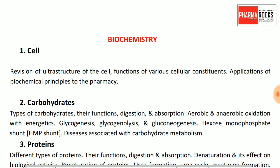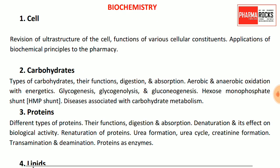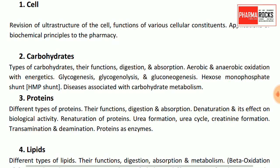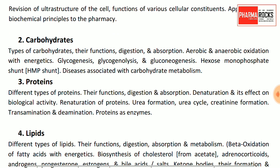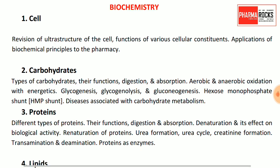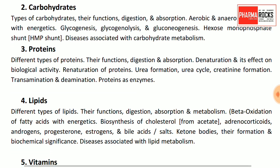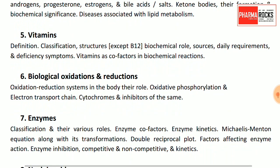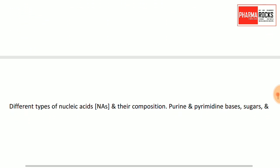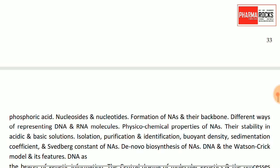For biochemistry in GPAT, the recommended book is U. Satyanarayana. Prefer chapters on cell, carbohydrates, proteins, lipids, vitamins, biological oxidation-reduction, enzymes, nucleic acids, and the vitamin chapter. Hereditary diseases are also important from biochemistry.